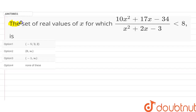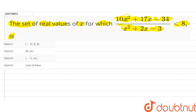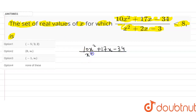In this question we have to find the set of real values of x for which the function (10x² + 17x − 34) / (x² + 2x − 3) is less than 8. So for real values of x we have to find the range of x for which this inequality holds.